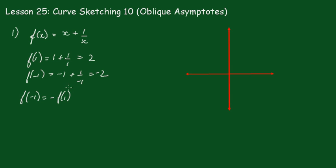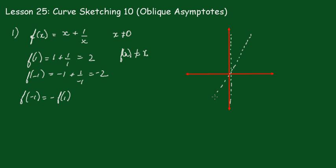Since the function is odd, we note that x cannot equal 0, so we have a vertical asymptote along the y-axis. Also, because x can never be 0, this part can never equal 0, meaning f(x) can never equal x — it will always be x plus or minus some value. So there must also be an oblique asymptote.